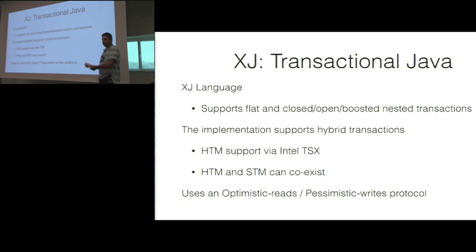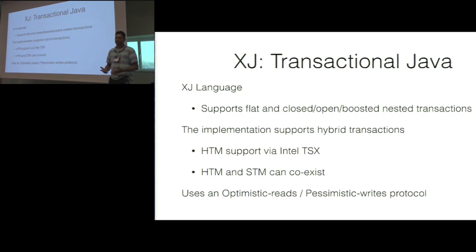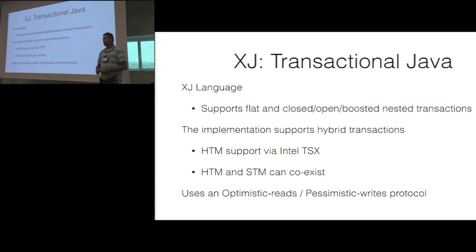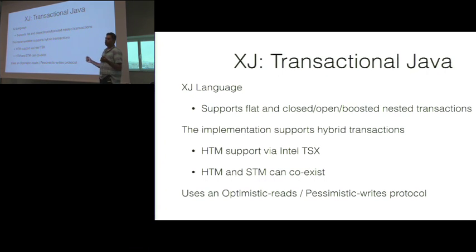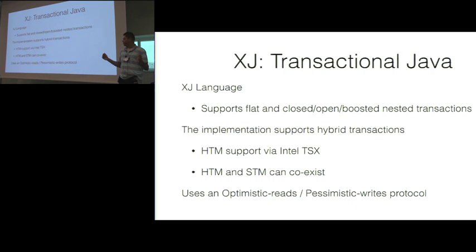Our system XJ is a language for Java for expressing transactions. You can express transactions as flat, Closed Nested, Open Nested, or Boosted transactions. The implementation supports HTM transactions using the Intel TSX instruction set, and a notable feature is that we allow HTM and STM transactions to coexist — two concurrent transactions, one running in HTM and another in STM, can operate on the same object while the system guarantees that transaction semantics are met.